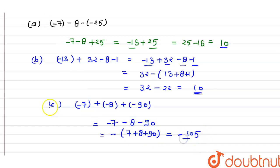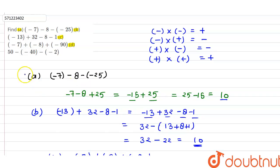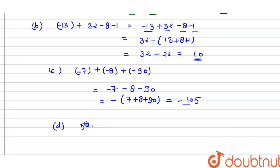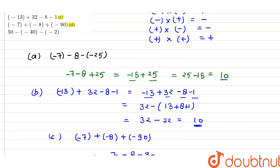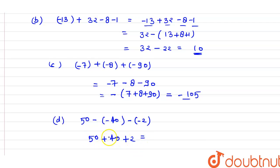The last part D is: 50 minus minus 40 minus minus 2. Solving this: 50 remains 50; multiplying minus with minus gives positive 40; multiplying minus with minus again gives positive 2. Adding these: 50 plus 40 is 90, plus 2 is 92. So 92 is the answer of part D.